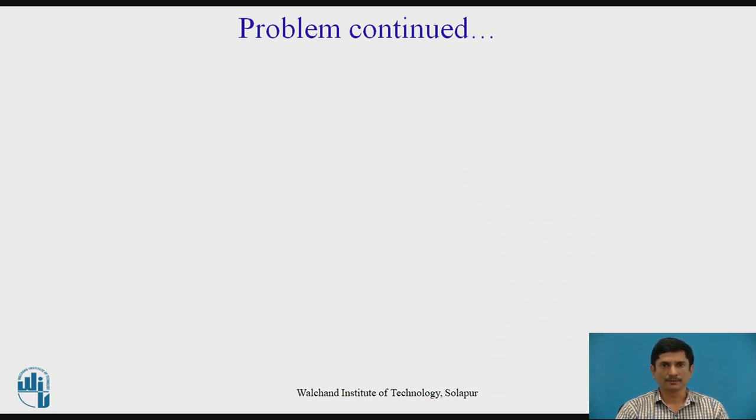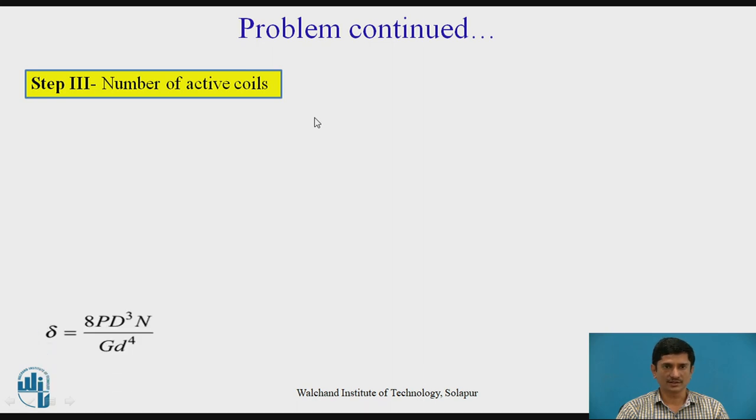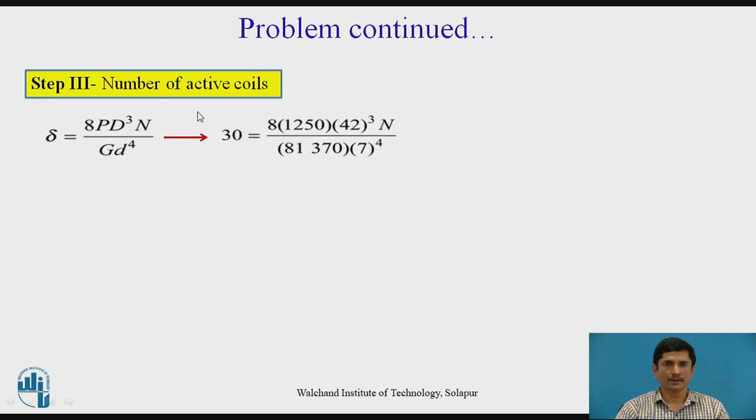Now, the next part. I need to get the number of active coils. How to get the number of active coils? The relation is of load deflection. We need to put the corresponding values. The deflection given for load 1250 Newton is 30 millimeter. Other values are: capital D = 42, G = 81370, and small d = 7. Solving this equation, I can get the number of coils: N = 7.91.